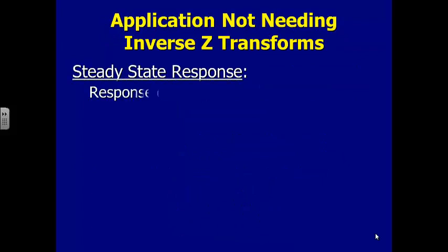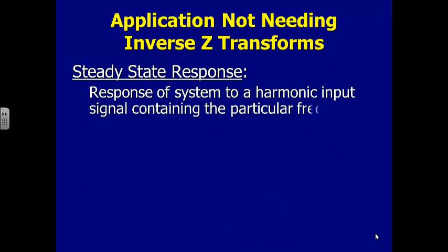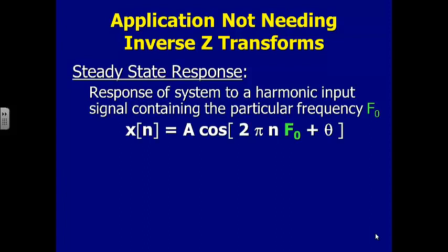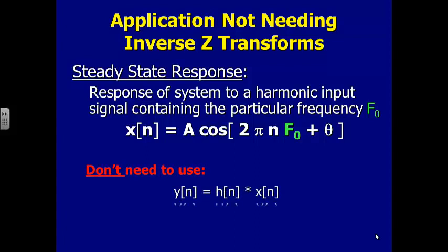What we can do now is find the steady state response to harmonic signals — sines and cosines — which are discrete time versions with a digital frequency, some magnitude and phase. We put that into the system and want to know what comes out. We could always do convolution or use transforms, but for just steady state responses, we don't want to go through that trouble. We have a shortcut method.